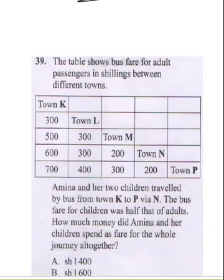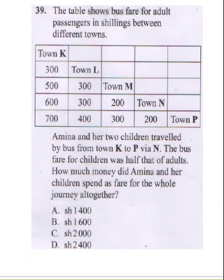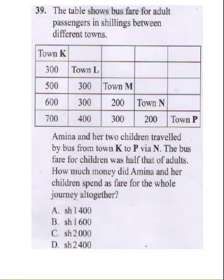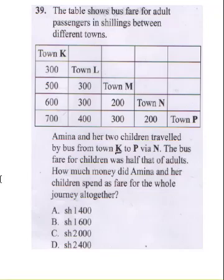The next question says: the table below shows bus fares for adult passengers in shillings between different towns. Amina and her two children traveled by bus from town K to P via N. The bus fare for children was half that of adults. How much money did Amina and her children spend as fare for the whole journey altogether? They moved from K to N first, then from N to P.